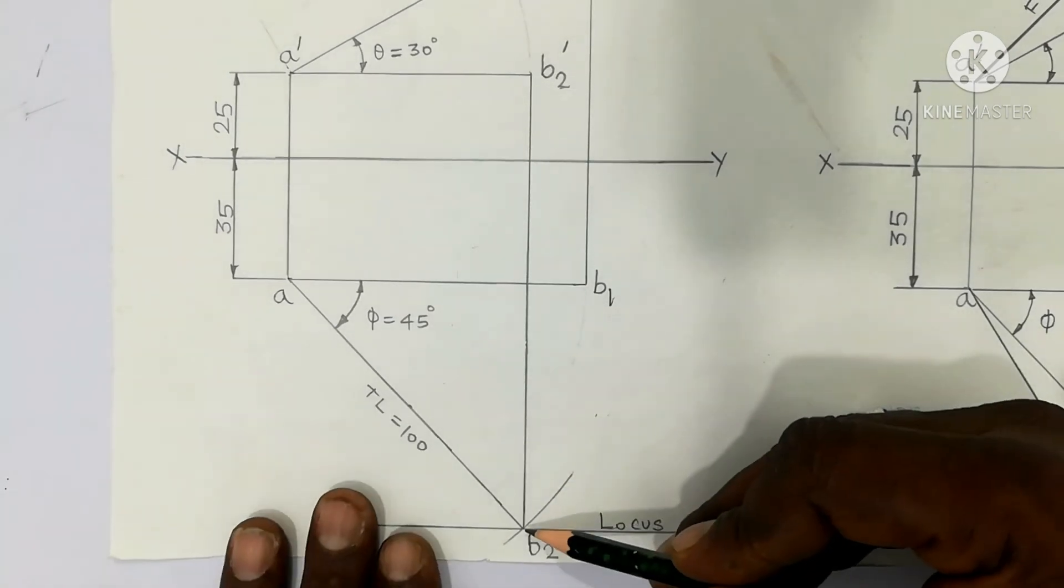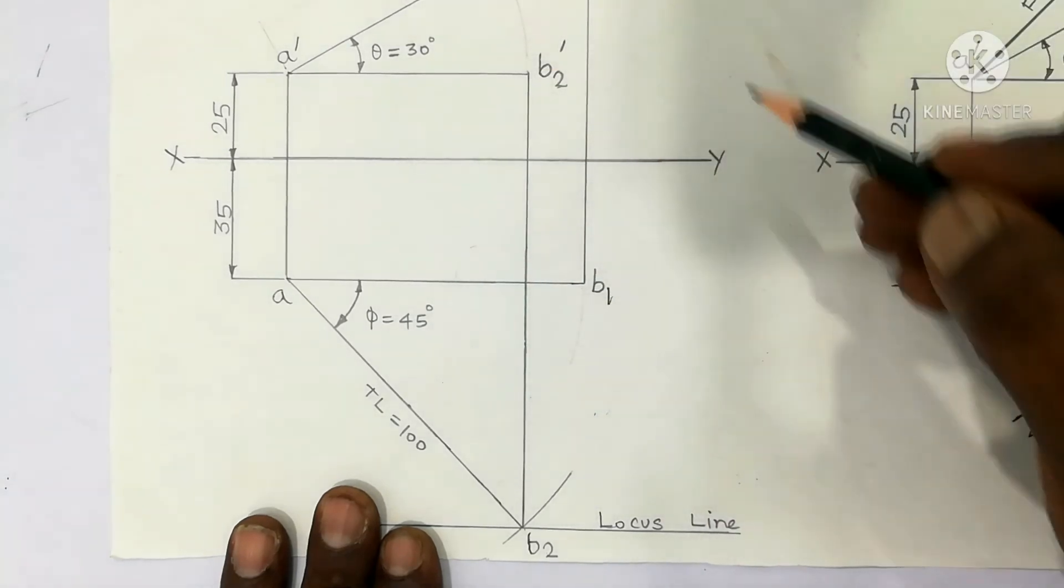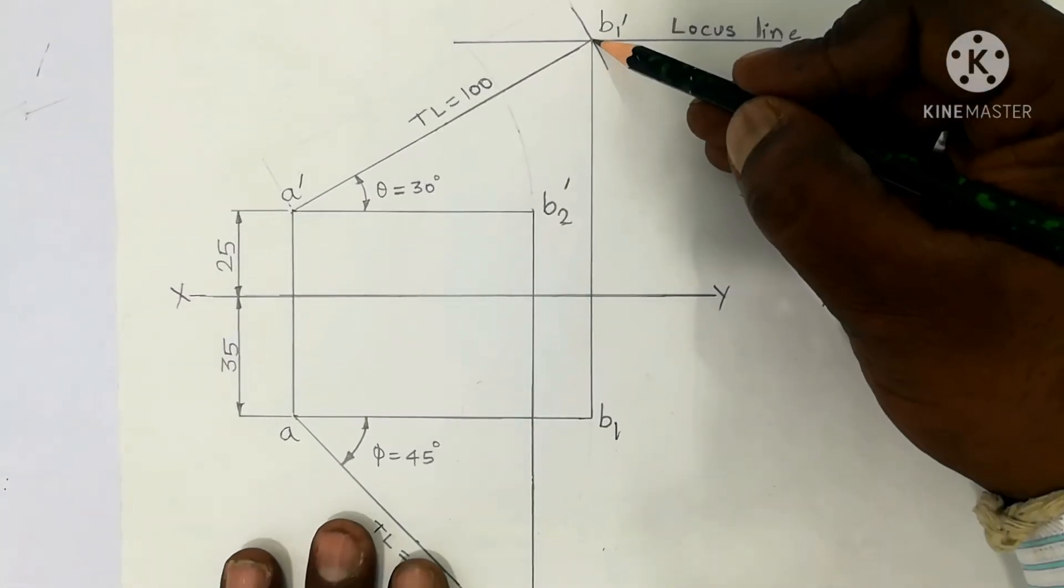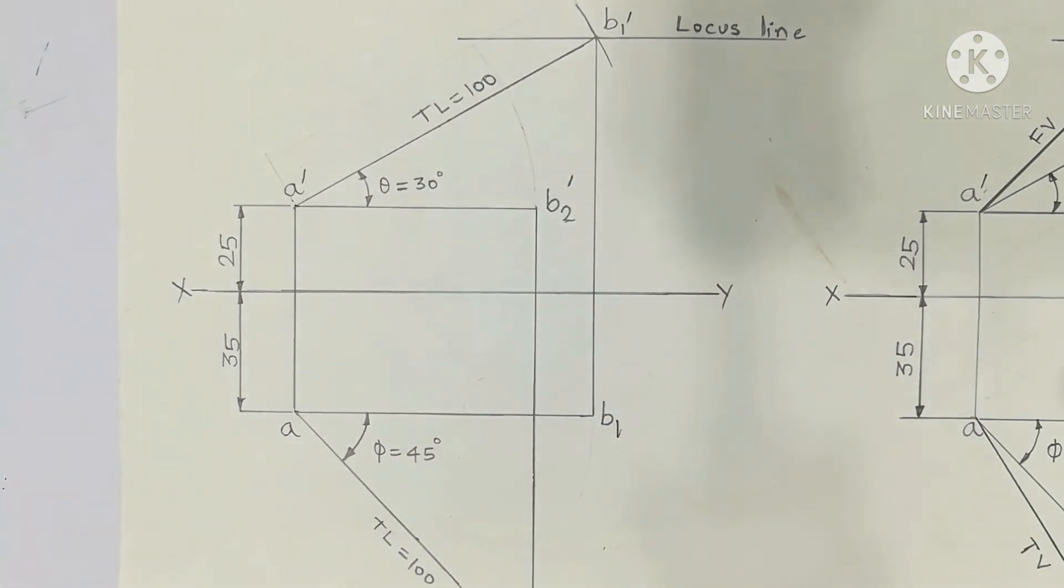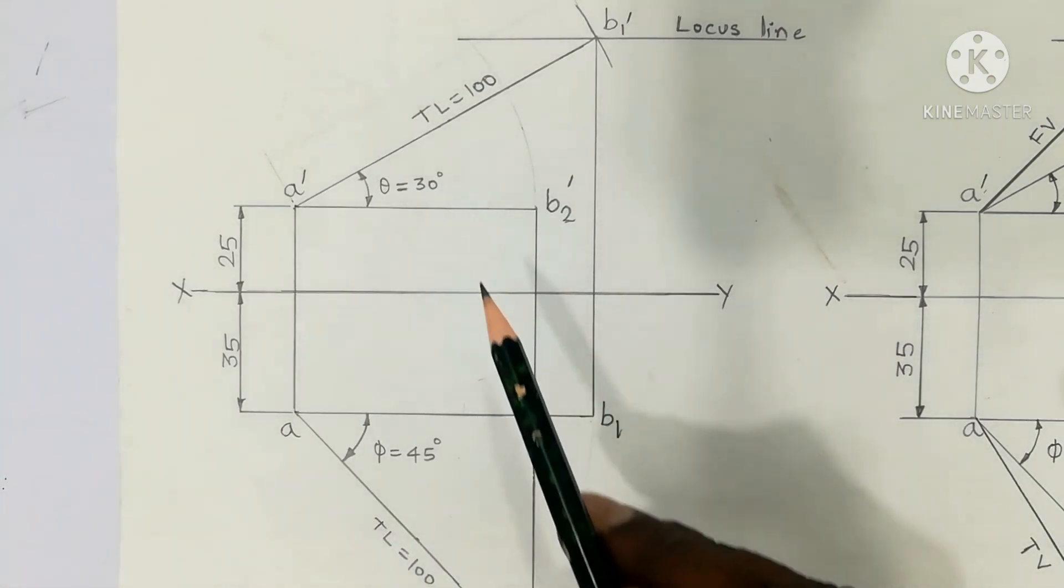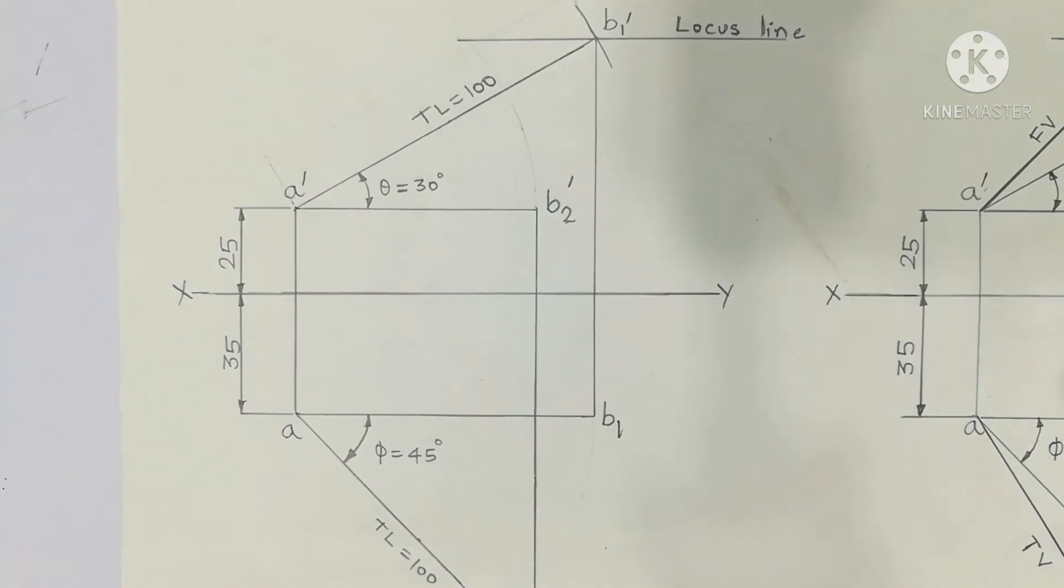Next, you will drop projectors from B2 prime. From B2 prime, vertical projector drawn by 2H pencil. B1 prime, below, vertical projector drop. So you will get true inclination with HP 30 degrees, true inclination with VP 45 degrees complete.